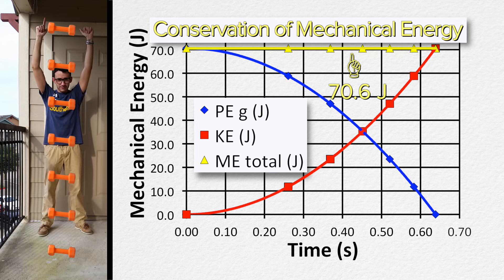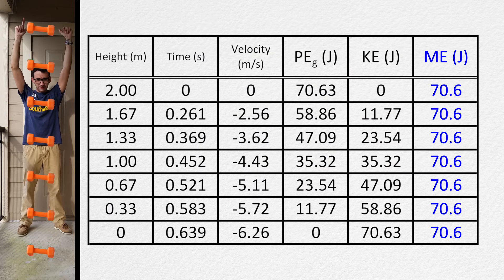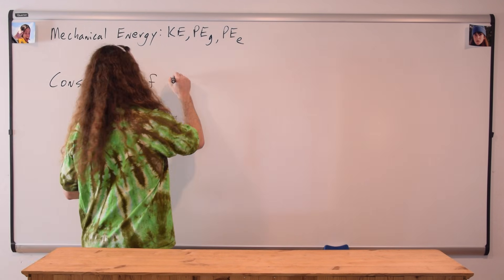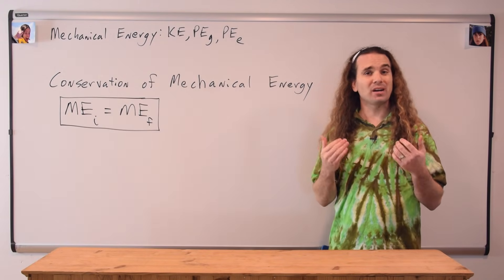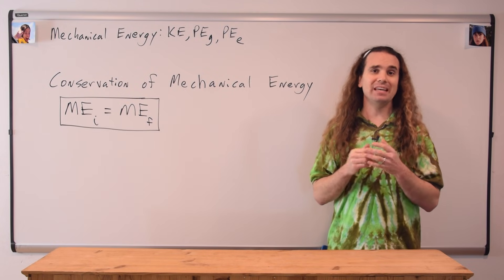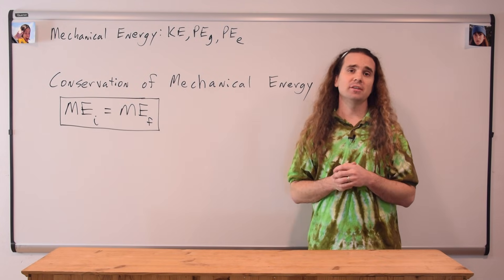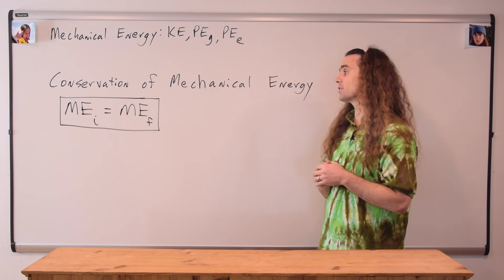The total mechanical energy stays the same the whole time the object is falling. Can you put the data table back up and add a column for the total mechanical energy? Sure, I can do that. The total mechanical energy at every point adds up to 70.6 joules. The equation for conservation of mechanical energy is: the total mechanical energy initial equals the total mechanical energy final.